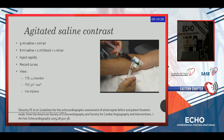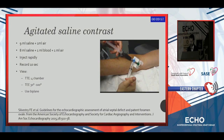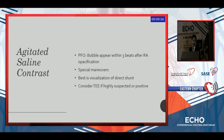Agitated saline contrast is very important — you almost cannot diagnose without it. You mix either 9 ml of saline with 1 ml of air, or 8 ml of saline with 1 ml of blood and 1 ml of air to improve agitation. Inject rapidly, record for 10 seconds, and if doing transesophageal echo, find the best angle showing the separation between septum secundum and septum primum — the thin primum and the thick secundum. For transthoracic echo, it's usually the four-chamber view. By definition, if a bubble appears in the left system within three beats after right atrial opacification, it identifies a PFO.